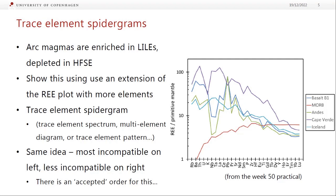One way we can show this is on a trace element spider diagram, or spidergram, or trace element spectrum, or multi-element diagram, or trace element pattern — there are tons of different names for it, but it basically is an extension of the rare earth element plot. We covered this in the practical last week. It's the same principle where we have the most incompatible stuff on the left — so rubidium, sometimes caesium on the end — and the least incompatible stuff on the far right-hand side.